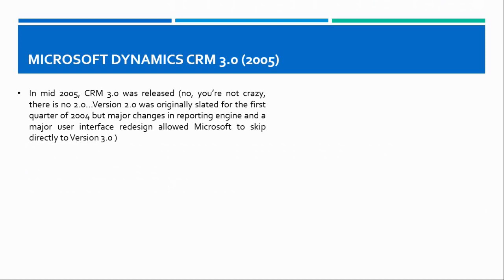CRM 3.0 was released in 2005. You may be wondering why there is no CRM 2.0 version mentioned here — because it was never released by Microsoft. Version 2.0 was originally slated for the first quarter of 2004, but major changes in the reporting engine and a major user interface redesign allowed Microsoft to skip directly to version 3.0.